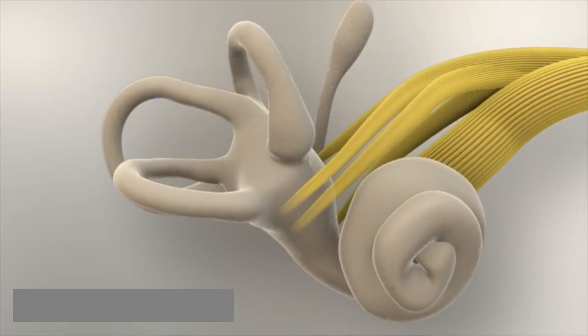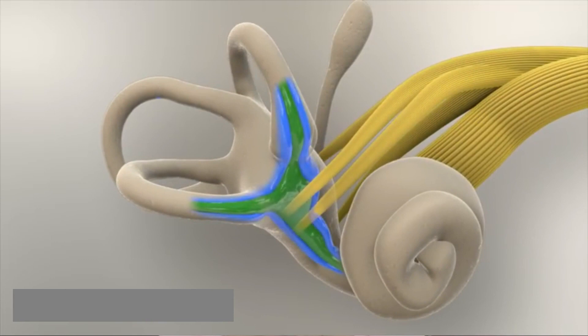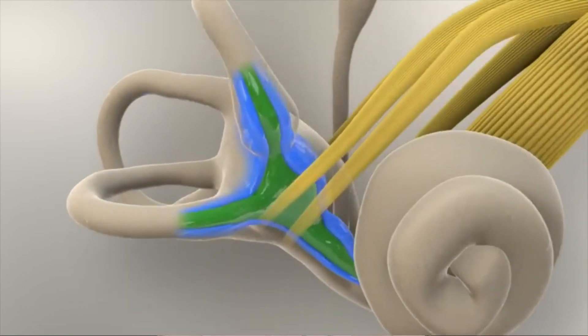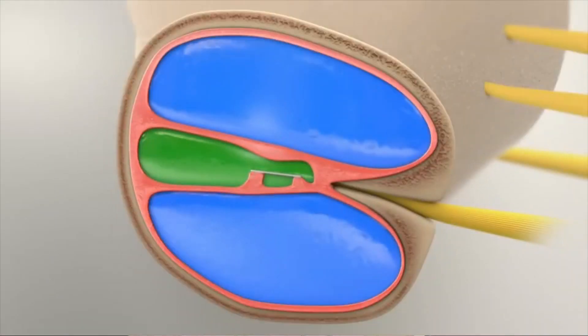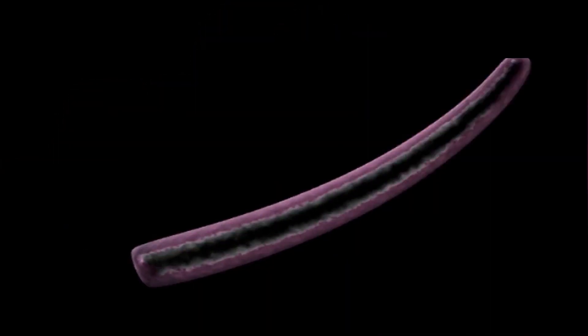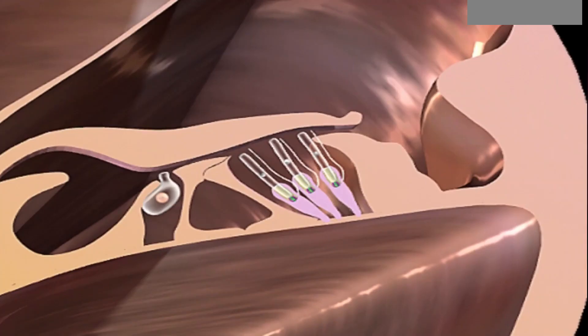In the inner ear, we have the endolymph and the perilymph. This is the center of the inner ear. This is the cochlear part, which is a large component of the auditory cartilage structure.